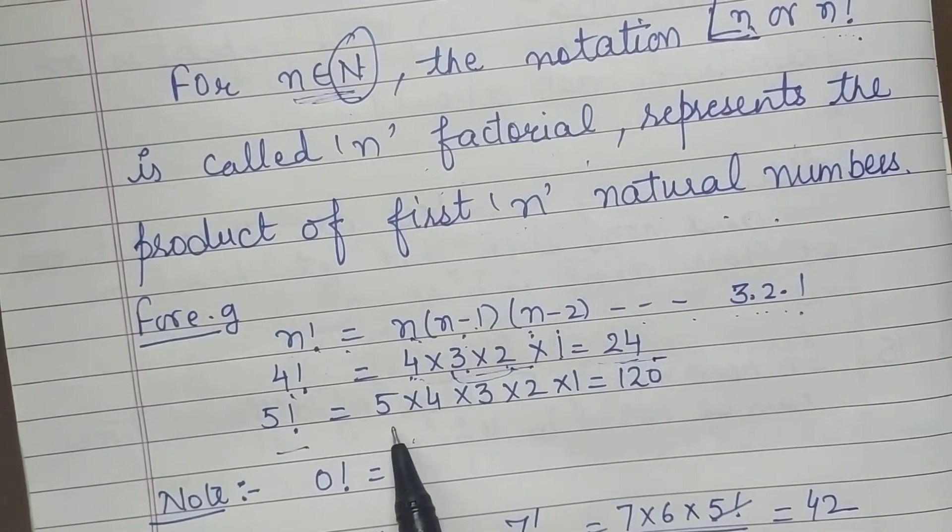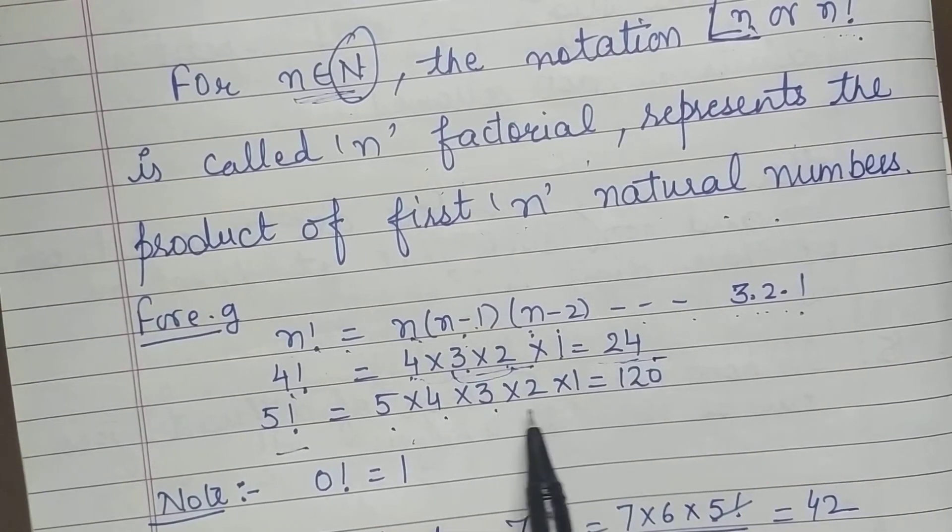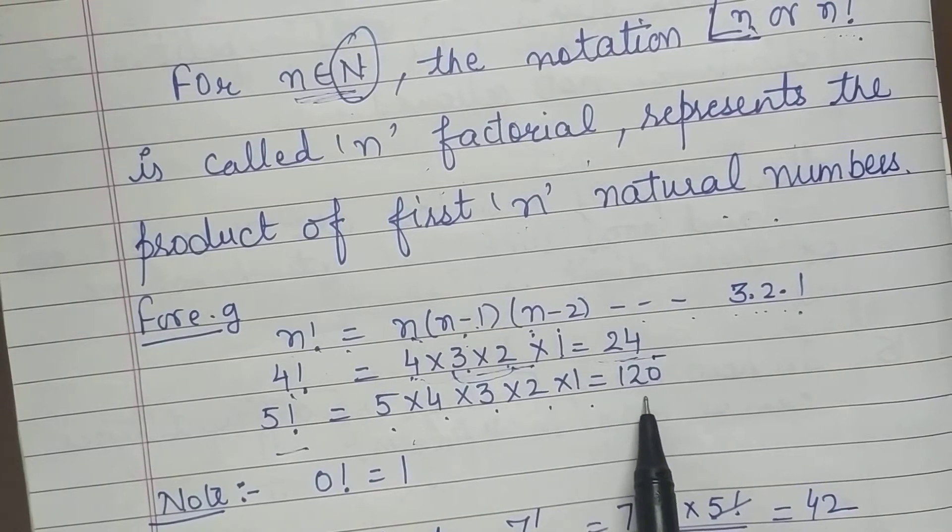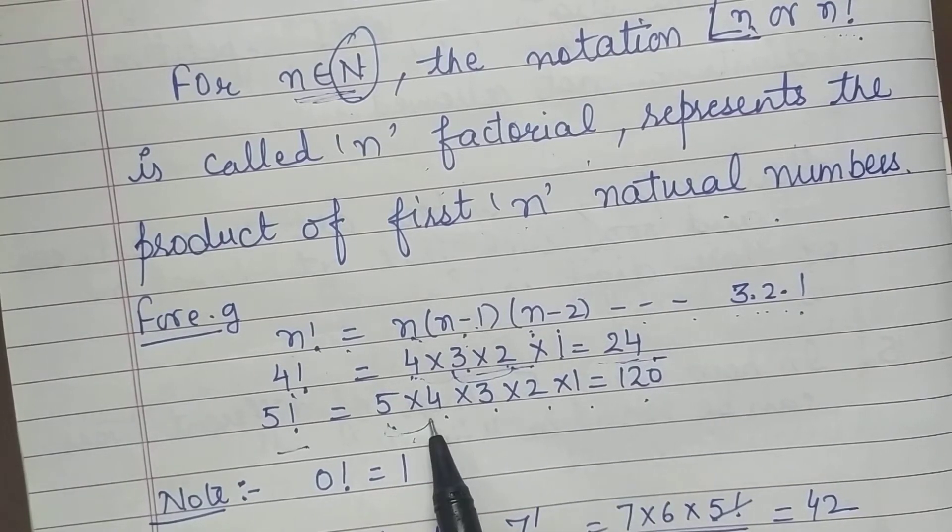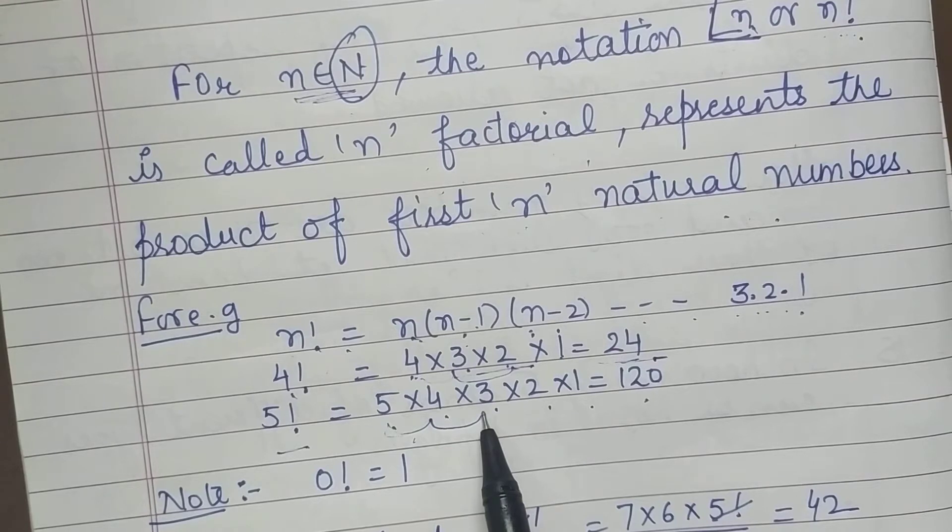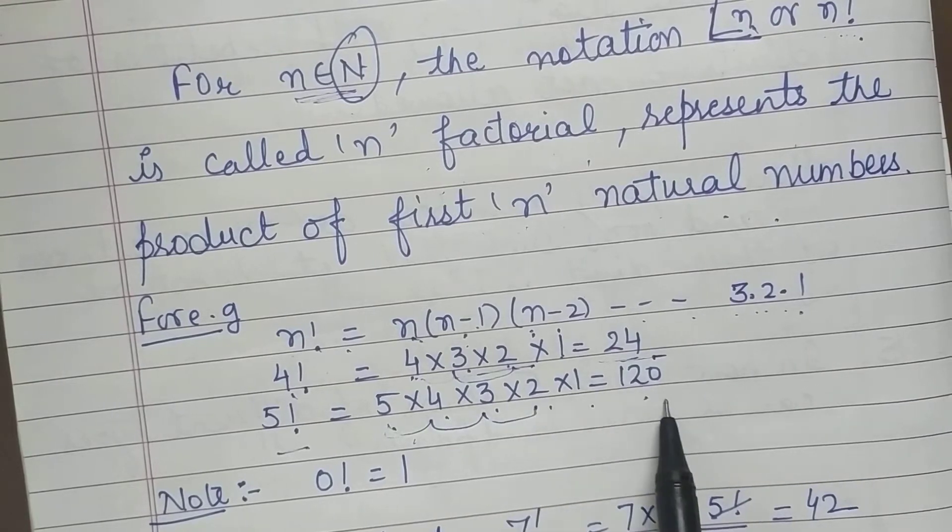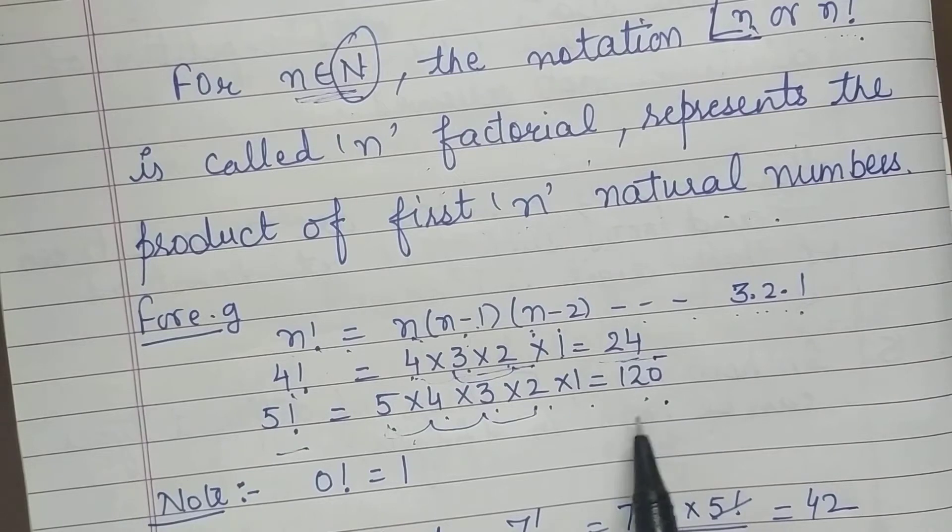5 factorial. 5, 4, 3, 2, 1. So multiply them 5 times 4 is 20, times 3 is 60, then times 2 is 120. So you can say this is 120.